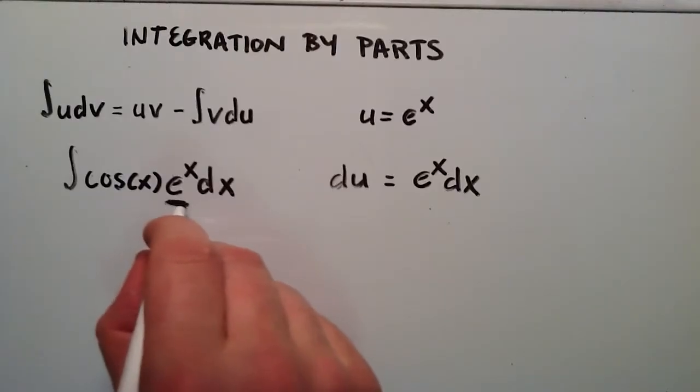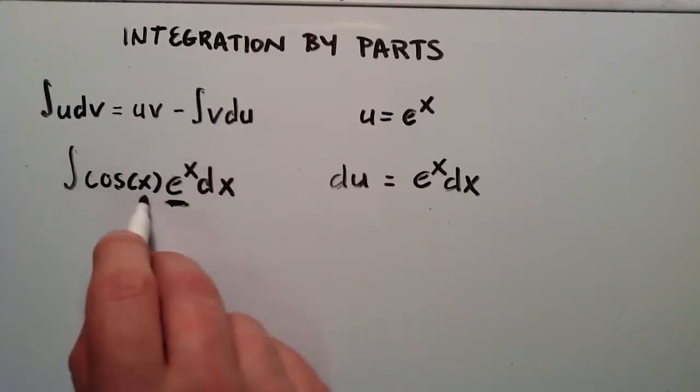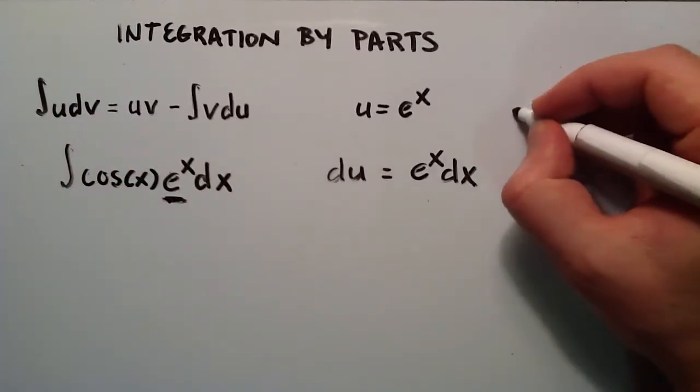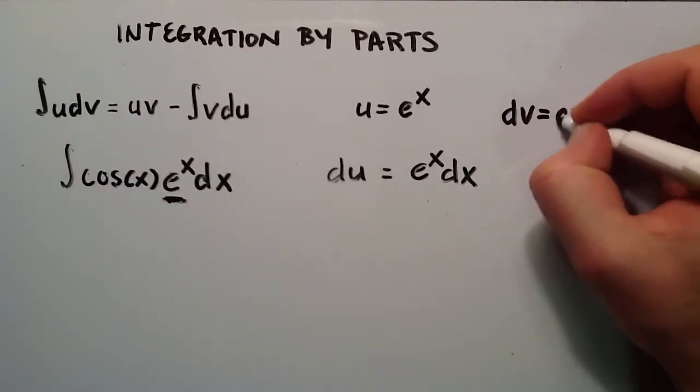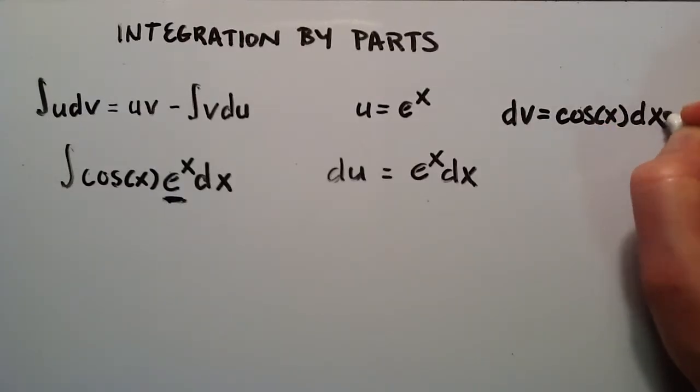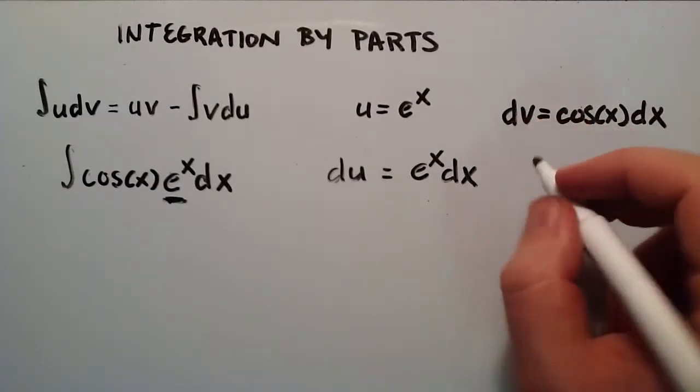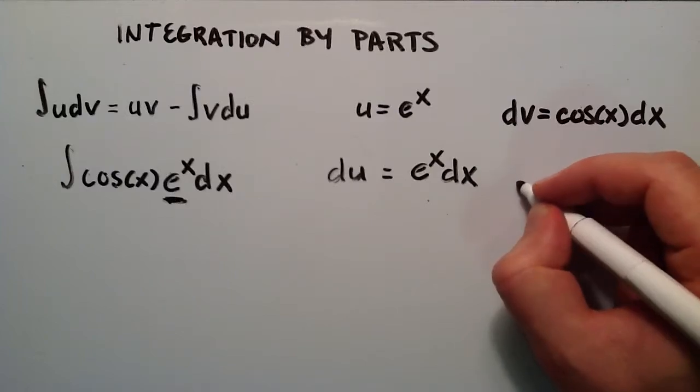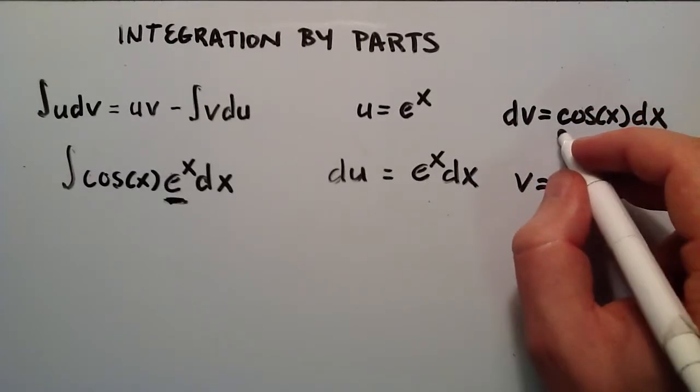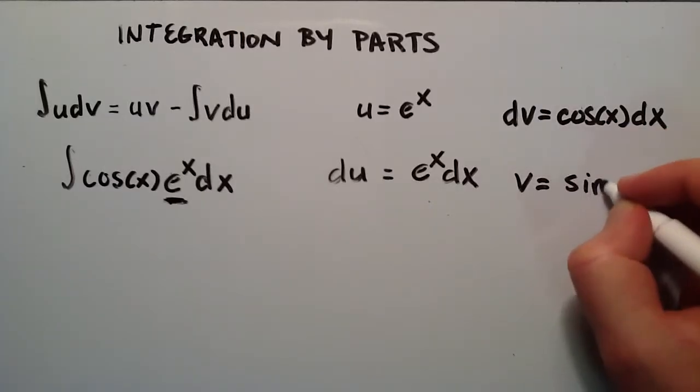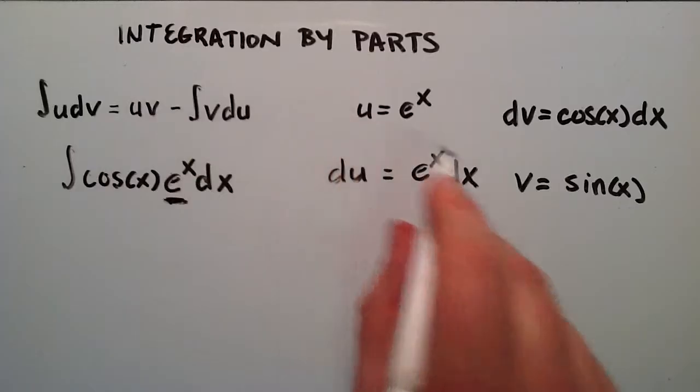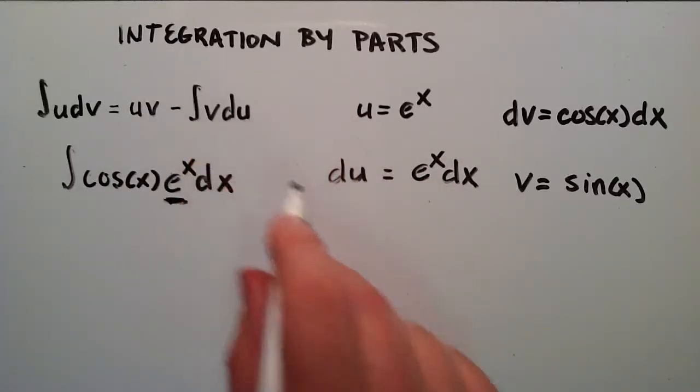So this was our u right here. That means that cosine x dx has to be the rest of it, has to be the dv. So dv is equal to cosine x dx. If we were to integrate the left hand side, the integral of dv is simply equal to v. And the integral of the right hand side is simply just going to give us sine x. So now we have our u and our v, and we have our du as well here.